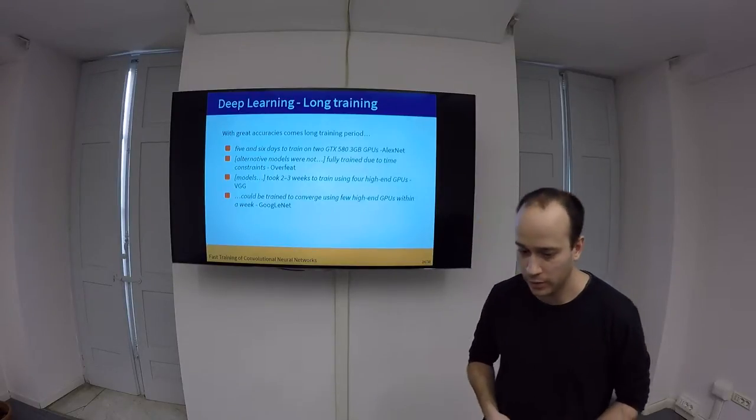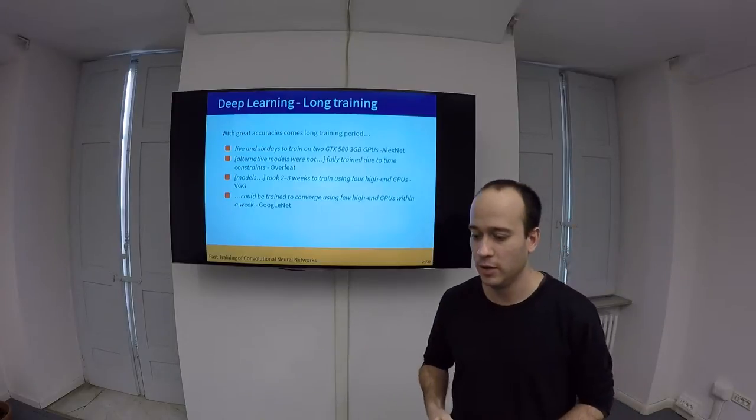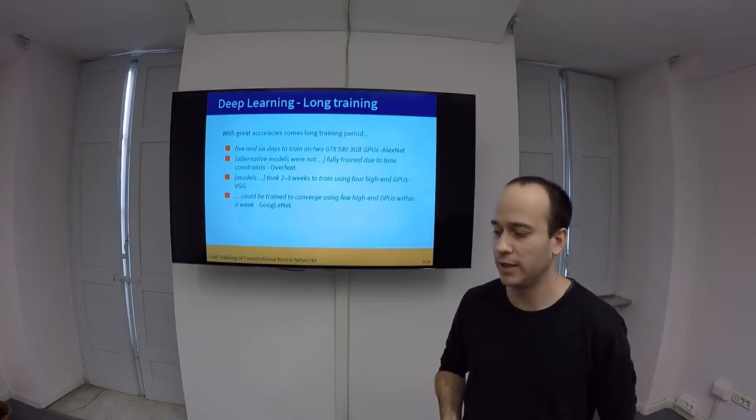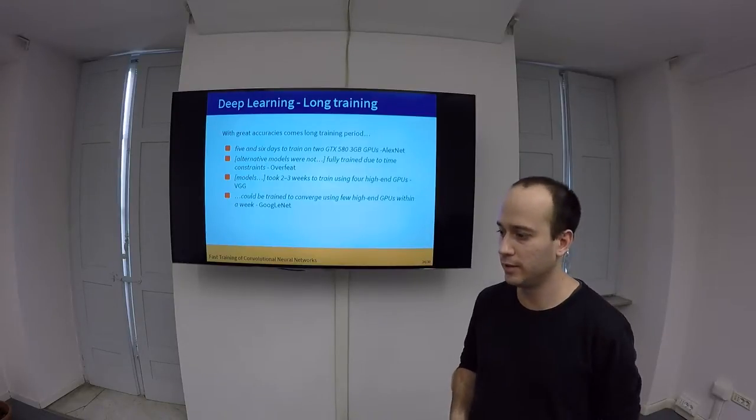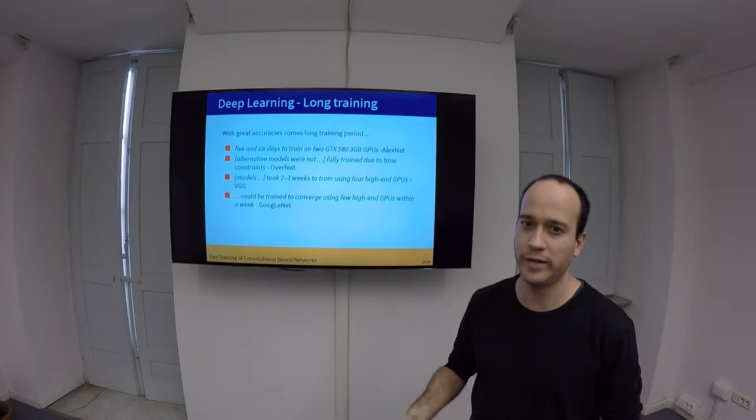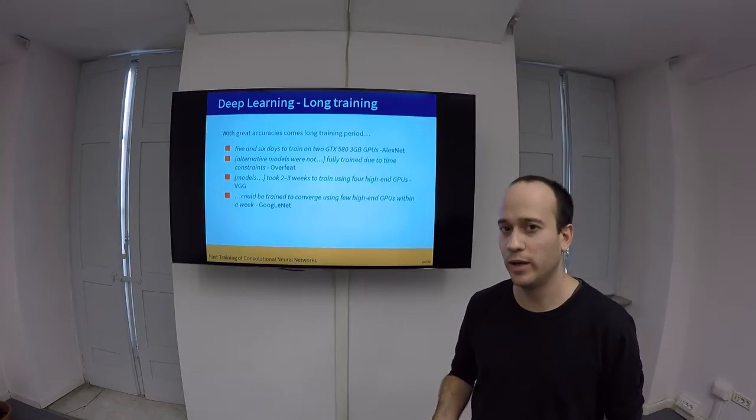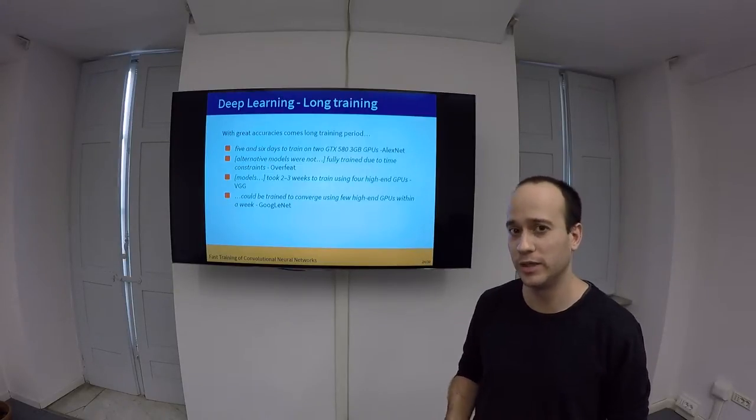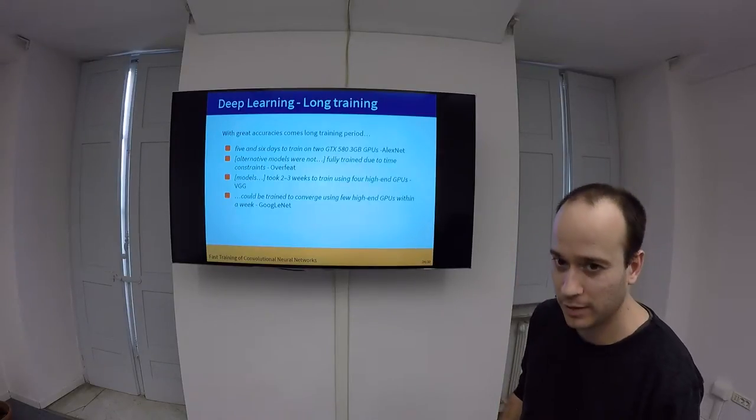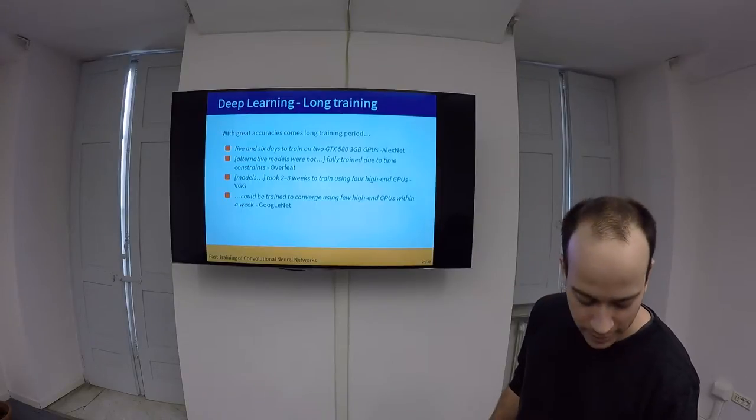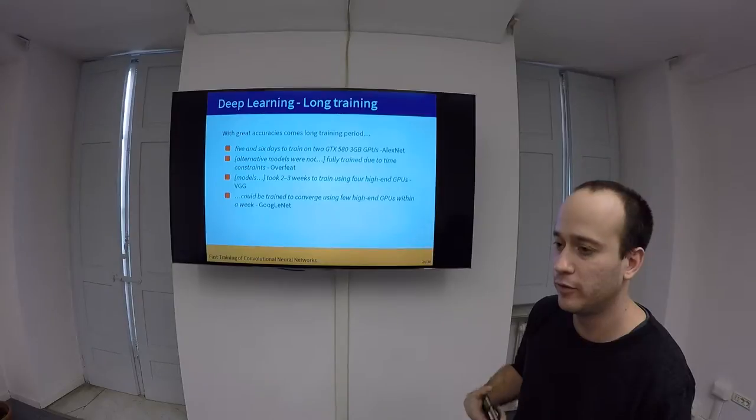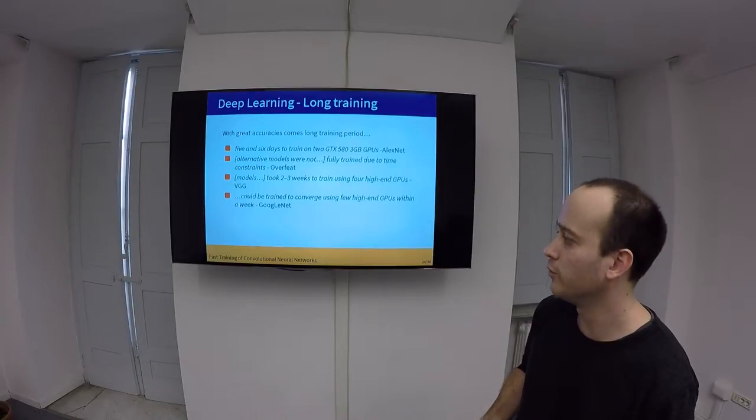So, here we see a problem, because it's true that low-level features, hand-engineered features like SIFT and SURF, gave poorer results, but they were already there. And here we have to take some weeks to train a classifier. So, this makes it evident that we need faster methods for speeding up the training of convolutional neural networks.